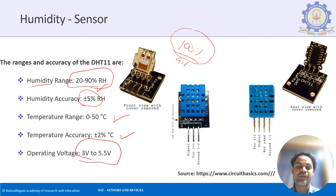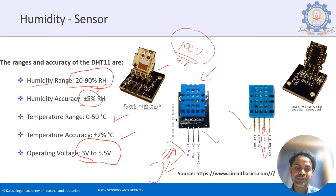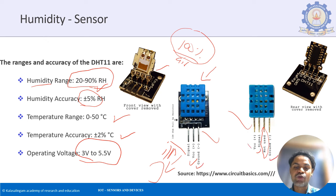The DHT sensor comes in 3-pin or 4-pin versions — both are the same, with one pin labeled 'not used' in the 4-pin version. The pins are: signal (connected to the digital pin of your microcontroller as it is an input device), VCC supply, and ground. Since it is a digital sensor, it handles the analog-to-digital conversion internally.